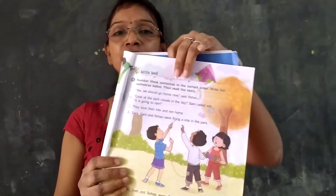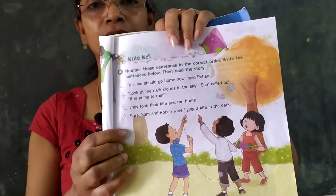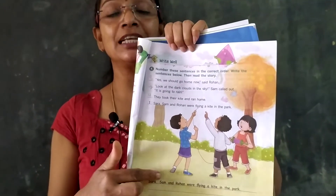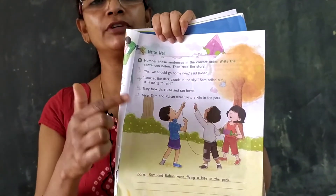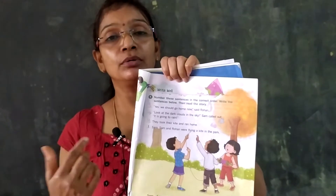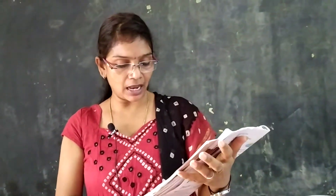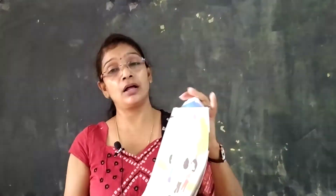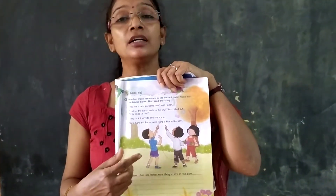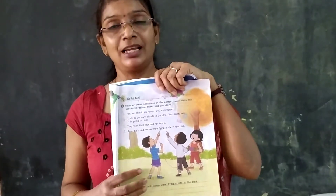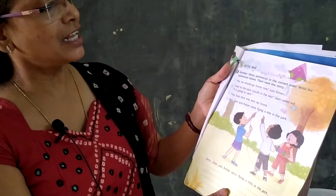We learned about nouns yesterday. Today we are going to learn rewriting sentences — it is a story. First, observe this picture. There are three children playing in the park. A sentence is given as a clue for you. Three children — Sarah, Sam, and Rohan — were flying a kite in the park. These three are friends.